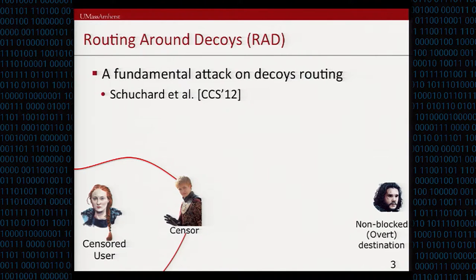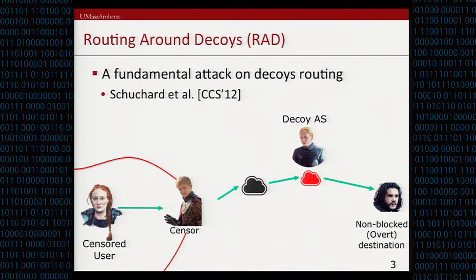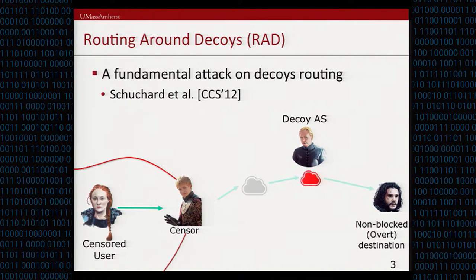Routing around decoys is perhaps the most fundamental attack on the decoy routing approach, and it was first proposed by Schuchard et al. at CCS 2012. In this case, the adversary — the censor — will manipulate any traffic to any overt destination if that connection contains a decoy router on the path. So even for normal users trying to reach legitimate, non-blocked destinations, if that BGP route contains one of those decoy autonomous systems, the censor will interfere by rerouting.